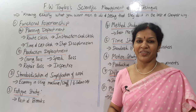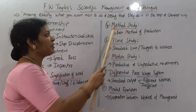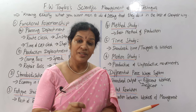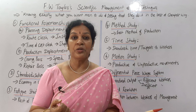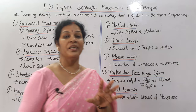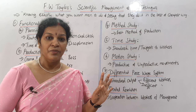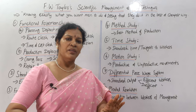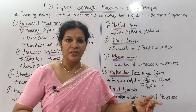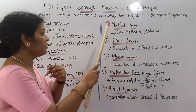Coming to the fourth technique: method study. Method study means what method we have to use for production. Taylor always suggested a modern method — one that is effective, gives best production, reduces cost, and keeps the system running smoothly without any damage or delay. That is called method study. The best method of production has to be implemented. If an old method is being used, upgrade it, find out what new methodologies other companies are following, modernize — so that you can get the best method of production.